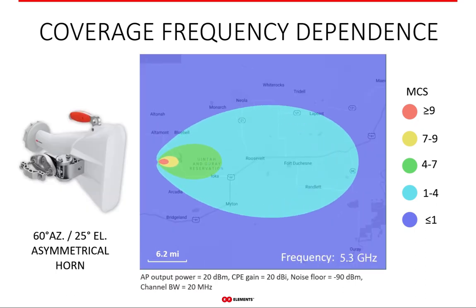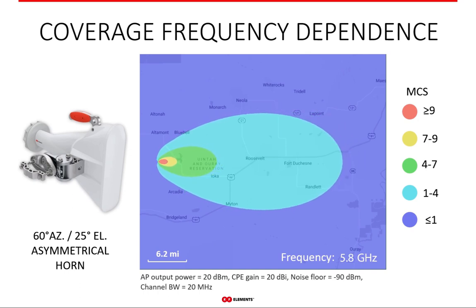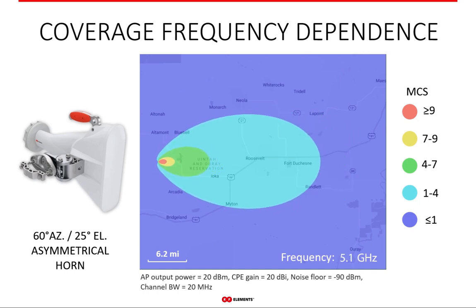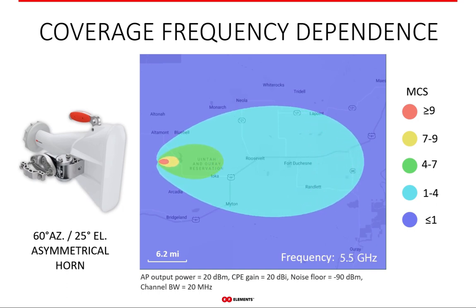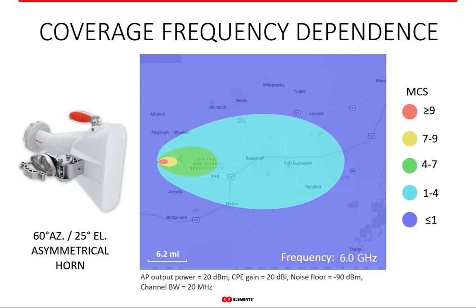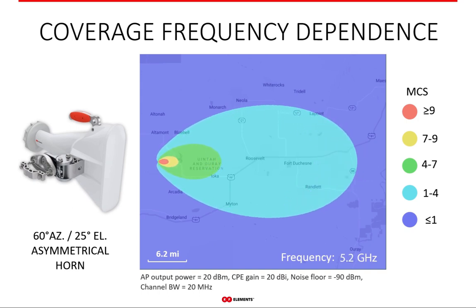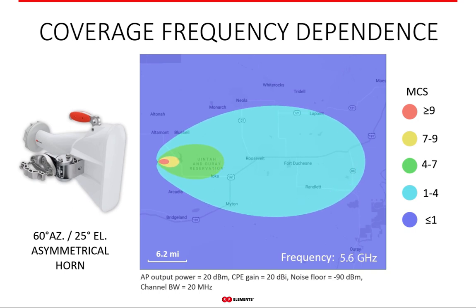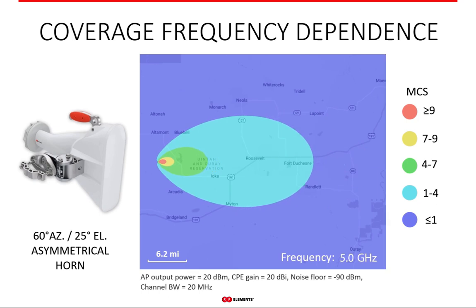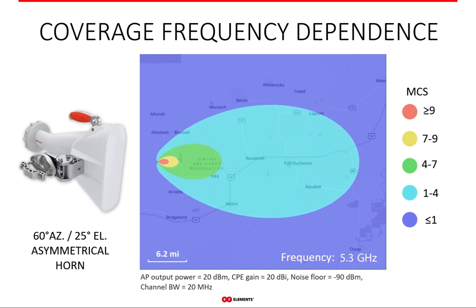Even more so with our horn antennas: if our patch array sector was stable, horns are super stable within the spectrum. The coverage is virtually unchanging, which is what you want from any sector or directional antenna. This way you can rely on its performance and provide headache-free service to your customers, which is a dream of every WISP out there.